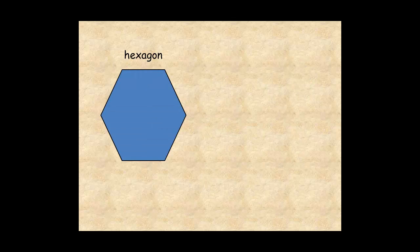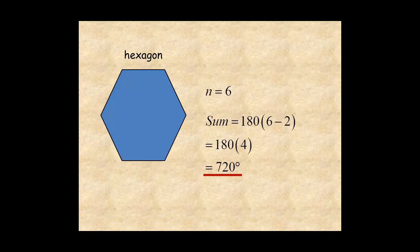This hexagon is a regular polygon, which means all of its sides and angles have equal measure. With six sides, the sum of the interior angles is 720 degrees. With six equal angles, each interior angle is 120 degrees.